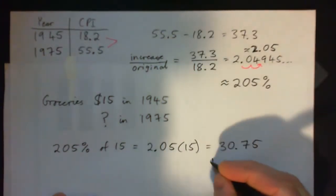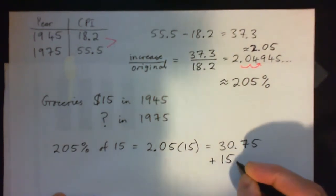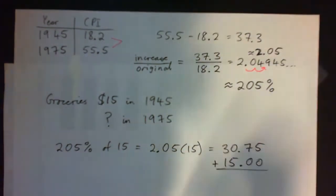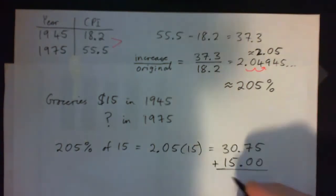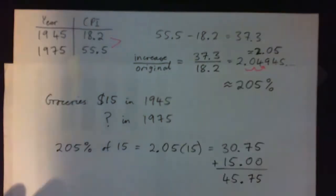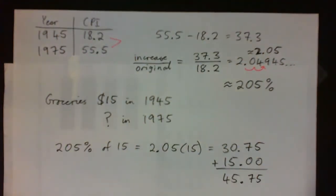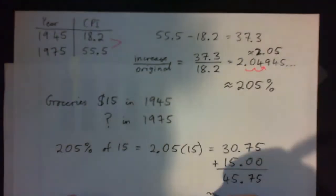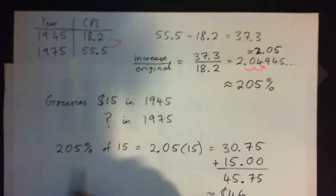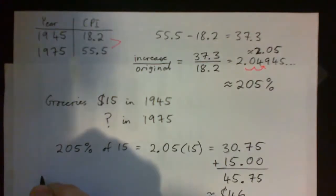It's going to cost me $15 but also 205 percent of 15. So the answer is 45.75, and we have to round that to the nearest dollar, so approximately 46 dollars.